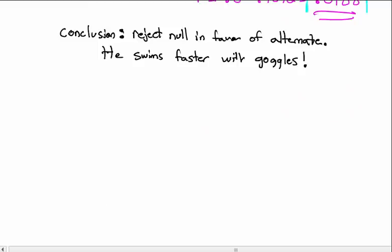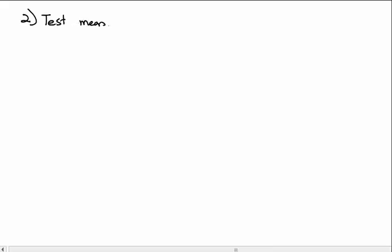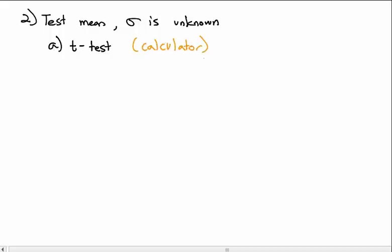Let's try another example — testing a mean where sigma is unknown. If sigma is unknown, we use a t-test, just as with confidence intervals, because we need more area in the tails. For hypothesis tests, the t-test is the only test you are allowed to do on the calculator.